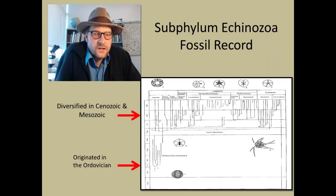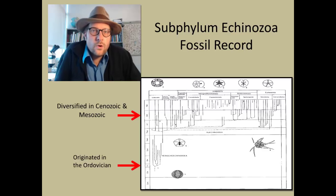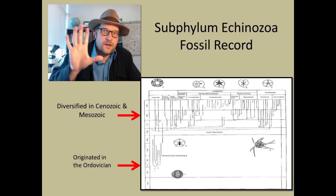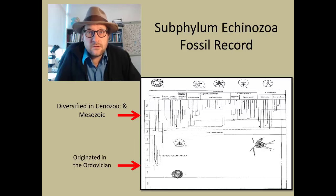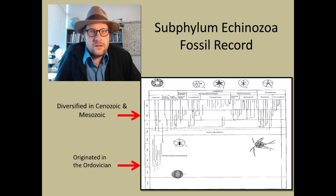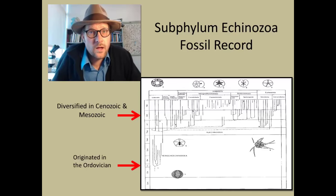The echinozoans originated during the Ordovician and are often grouped into whether they are irregular — that is, bilateral — or regular, in which they exhibit five-point symmetry. One interesting feature of the fossil record is that echinozoans become very diverse as you get into the Jurassic and Cretaceous, and are particularly diverse in the Cenozoic. In fact, today they are a very diverse group and doing quite well.